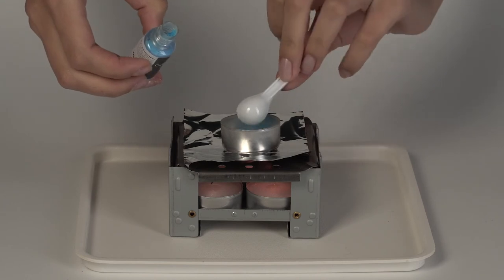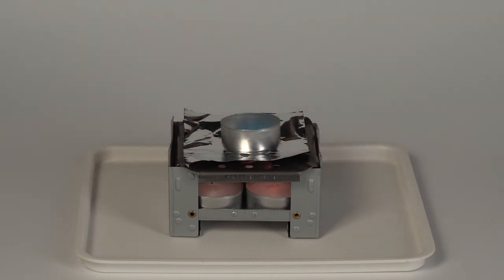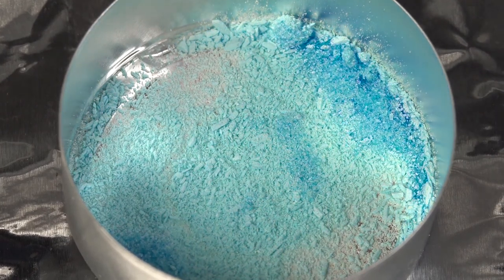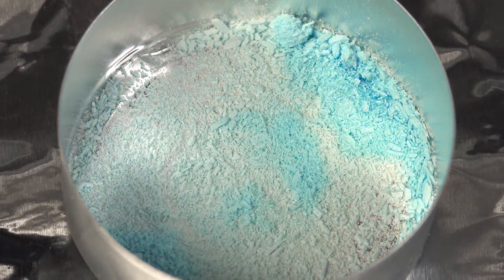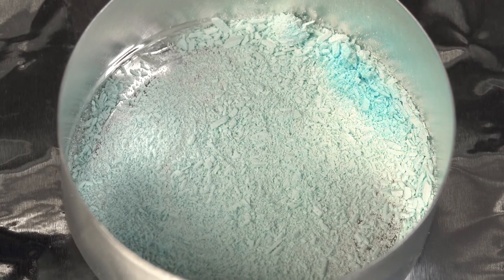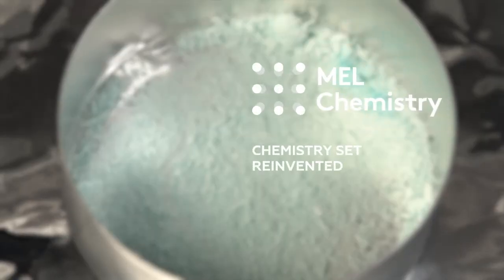Copper sulfate crystals contain water, and it is water that gives them their bright blue color. When heated, the crystals slowly lose water with the result that they gradually turn from bright blue to colorless.